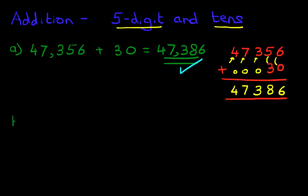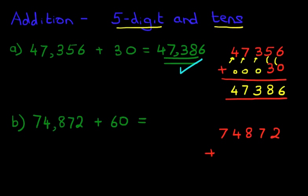Let's have a look at our second example. This time we have 74,872 plus 60. It's a little bit trickier, but let's do this again using the vertical format. Rewrite the question in columns: 74,872 plus 60. Notice where the 60 goes. Let's put a nice big equal sign, and we're ready to do the addition.